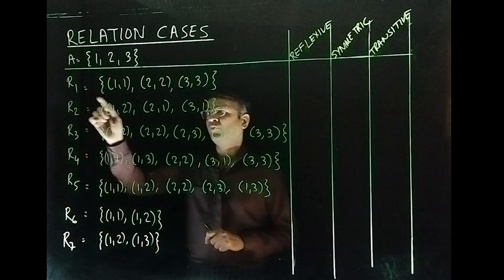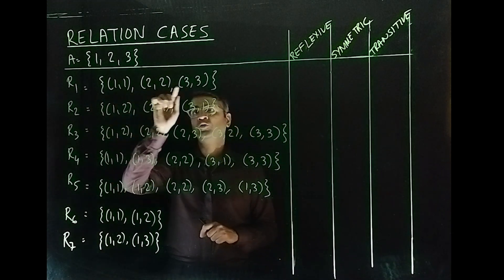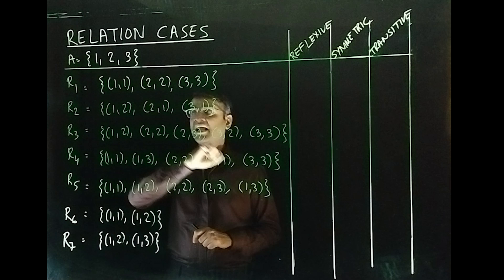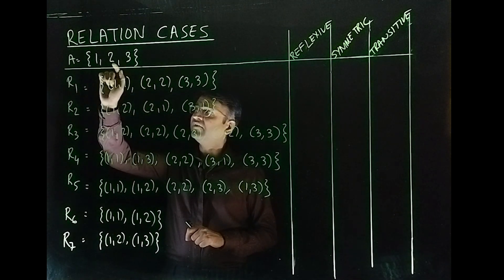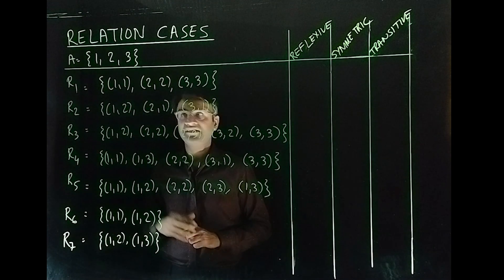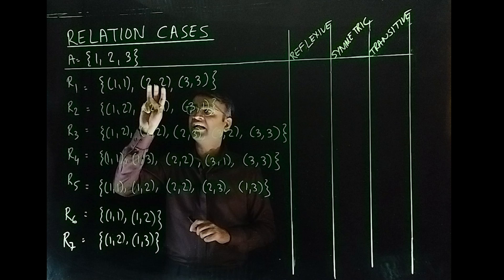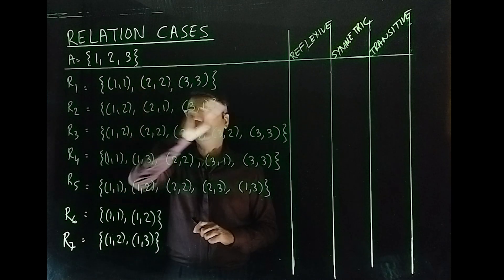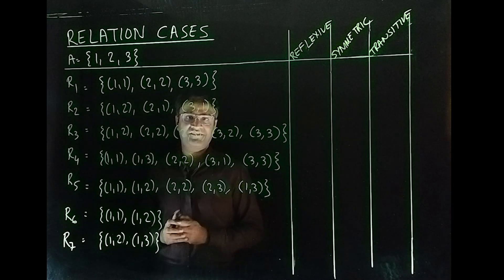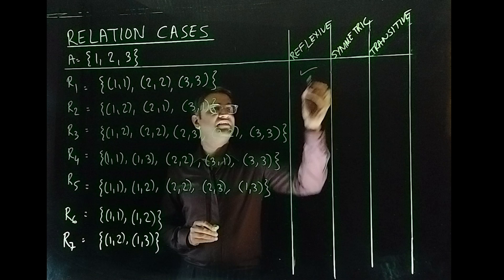So here in R₁, we see (1,1), (2,2), (3,3). But the question is, have I covered each and every element of set A? Yes, it has 3 elements and I have listed 3 ordered pairs, which are doublets in nature. So yes, it is.